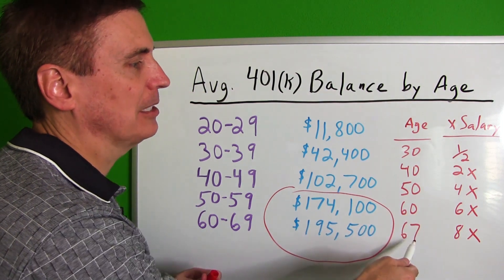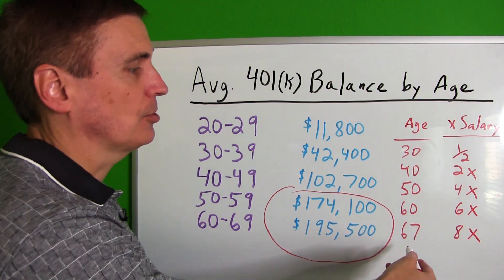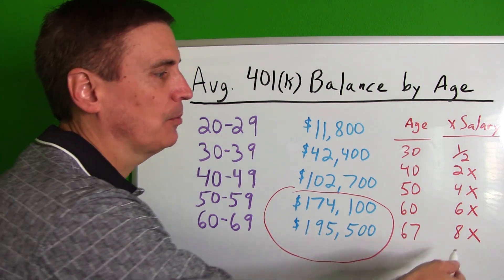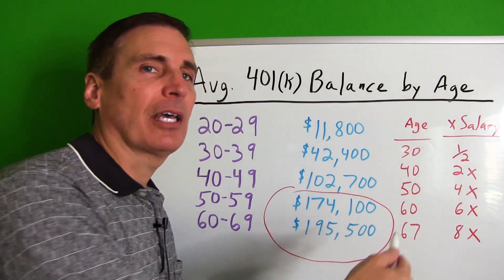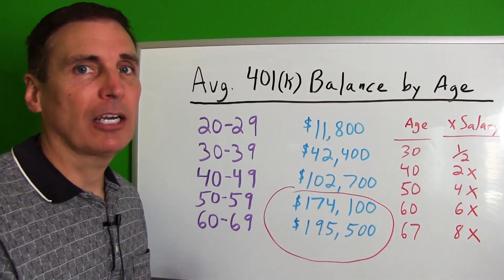And so on, down 50, 60, all the way to 67. And by age 67, eight times your salary. So if you're making, let's say you're still making $100,000 a year at age 67, they would want you to have at least eight times that $100,000 or $800,000 saved up in a retirement account.